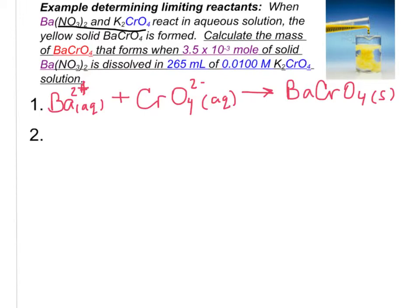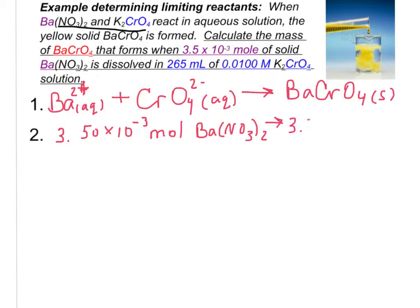We know we have 3.50 times 10 to the negative 3 moles of barium nitrate. When it dissolves, it gives us 3.50 times 10 to the negative 3 moles of our barium ion. So we know the moles of the barium ion.